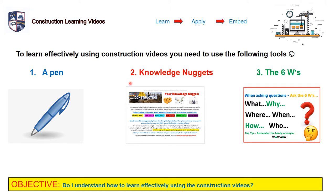You're going to need your Knowledge Nuggets, which contain all the knowledge that you need to learn as part of your construction course, and you're going to need the six W's questioning sheet.